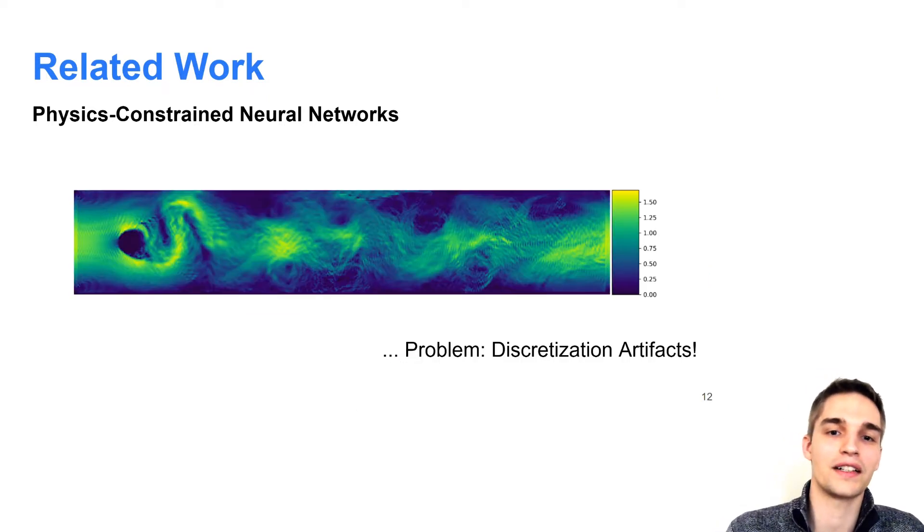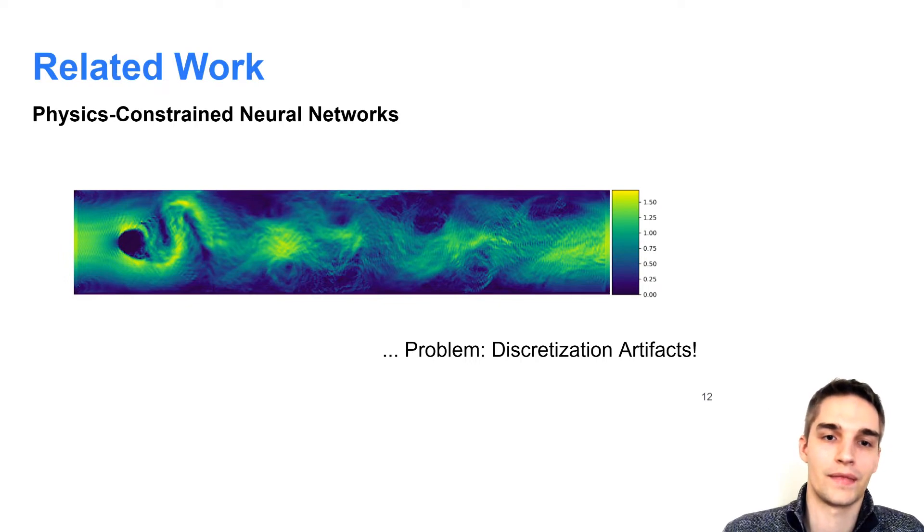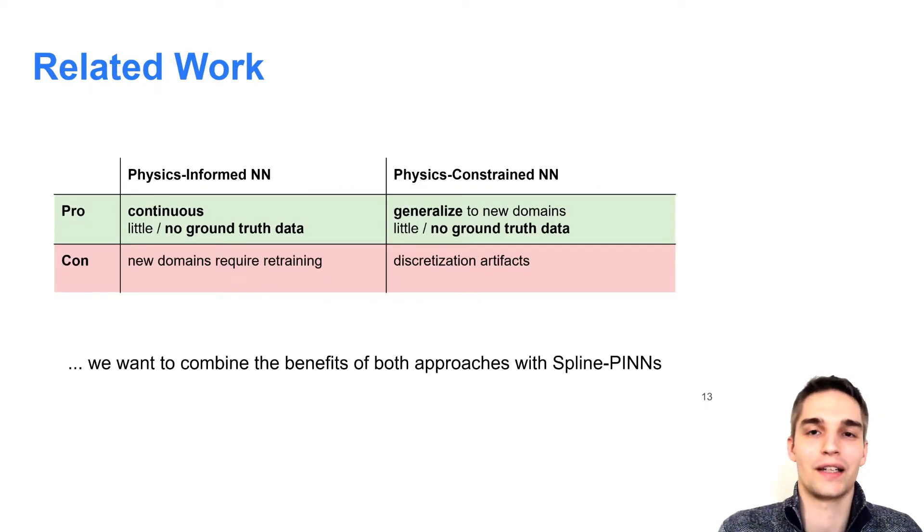These approaches have shown to generalize well to new domains that were not contained in the training set. However, the grid discretization and the loss based on finite differences can lead to inaccuracies and discretization artifacts, as can be seen here in the following depiction. So to conclude, our approach aims to combine the benefits of both approaches by continuously interpolating between discrete grid supports with Hermite splines. As we'll show in a bit, this allows us to train a CNN that generalizes well to new domains without ground-truth data and avoids discretization artifacts that arise from finite differences.